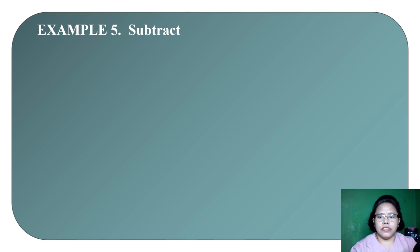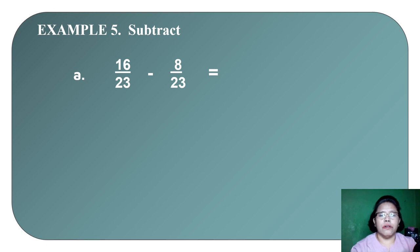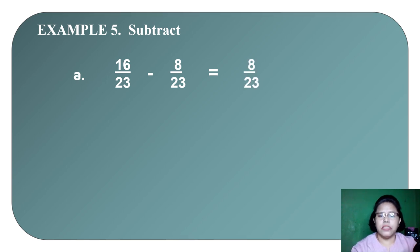Now let's do some subtraction. Example 5: subtract 16 twenty-thirds minus 8 twenty-thirds. This works the same as addition — since the denominators are the same, we just subtract the numerators: 16 minus 8 equals 8 twenty-thirds. We don't need to simplify since 8/23 is already in lowest term.